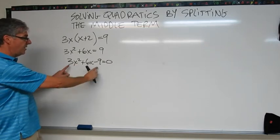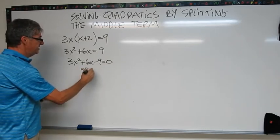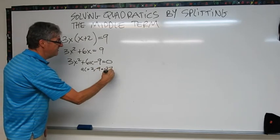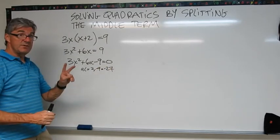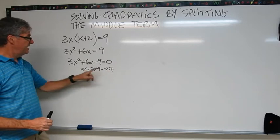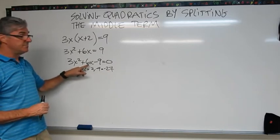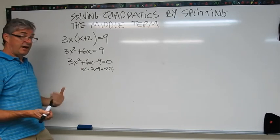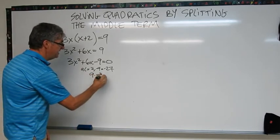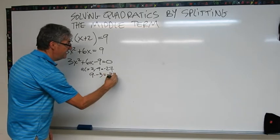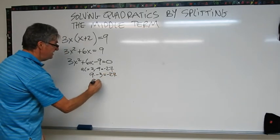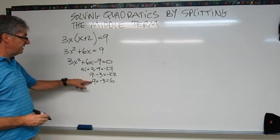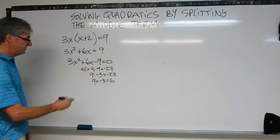So I'm going to figure out what my AC is. AC is going to be 3 times negative 9, which is negative 27. So now I need two numbers that multiply to negative 27 that add to the middle term, that add to 6. What do you think those numbers are? How about 9 times negative 3? That's negative 27. And 9 plus negative 3 equals 6. So those are our two terms for splitting this middle term. So let's do that.